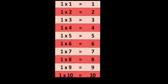Table of 1: 1×1 is 1, 1×2 is 2, 1×3 is 3, 1×4 is 4, 1×5 is 5, 1×6 is 6, 1×7 is 7, 1×8 is 8, 1×9 is 9, 1×10 is 10.